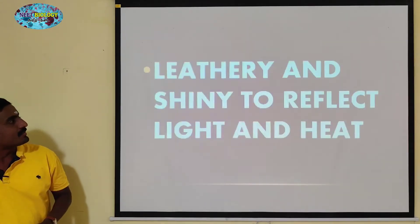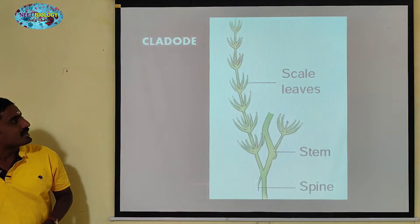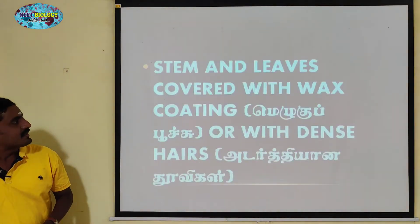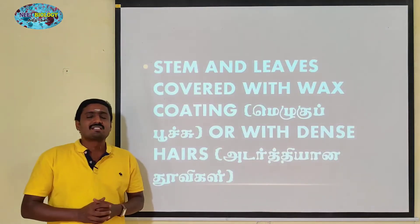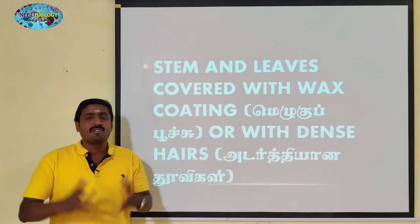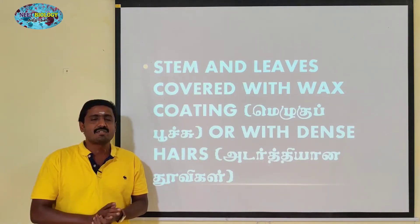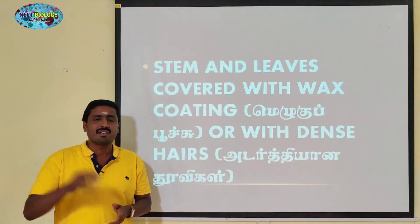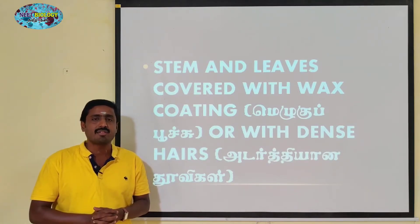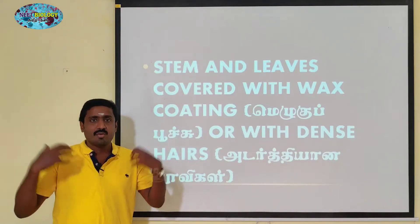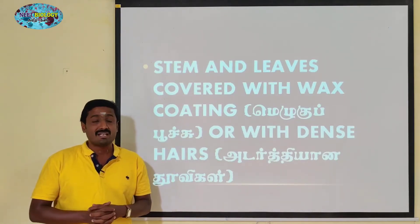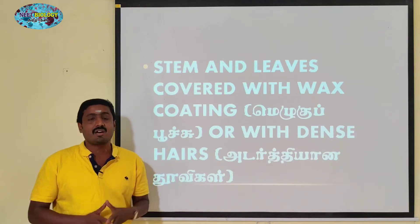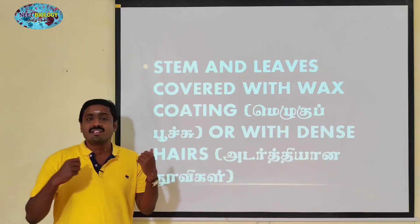The leaves are very hard. Why are they very hard? There are wax coatings. The need of this wax coating is that the sunlight will be reflected. In the summer season, the light rays will be reflected away from the plant.